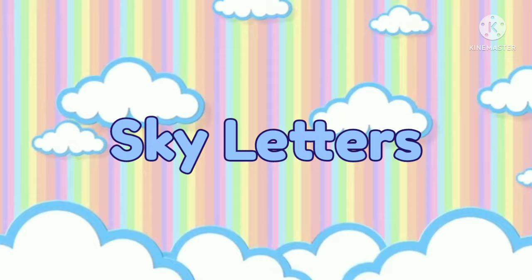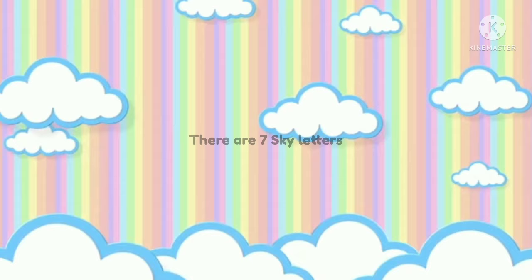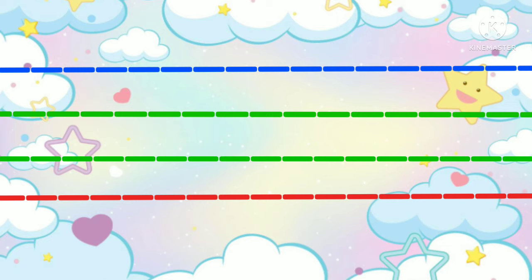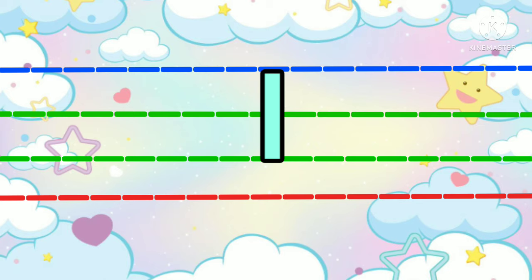Sky letters. There are seven sky letters. A sky letter starts from the first line and ends on the third line. Sky letters are B, D, F, H, K, L, T.